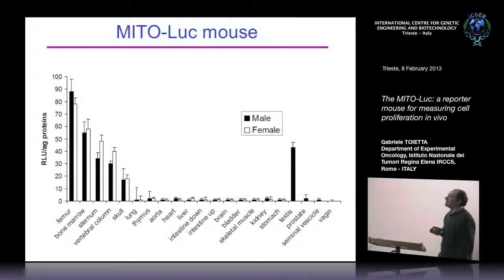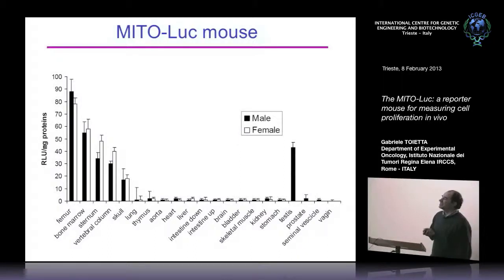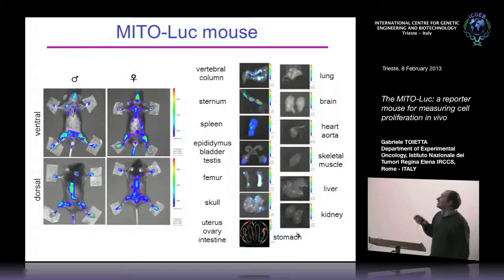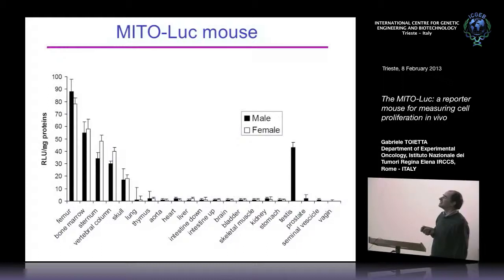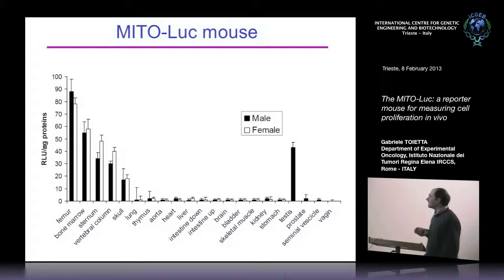Here again is confirmatory data on the tissues. The luciferase activity in tissue homogenates matches what you have seen by the in vivo machine. There is a very high level of luciferase activity in bone marrow, femur, and sternum, as well as in the testis for male animals, and very low levels of activity in brain, liver, and other tissues.